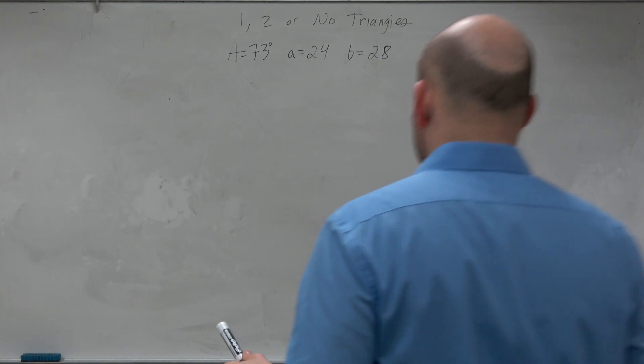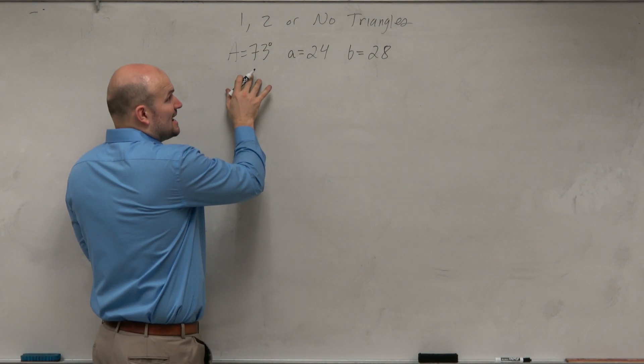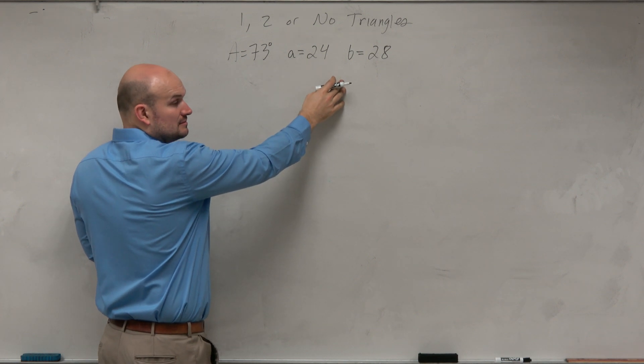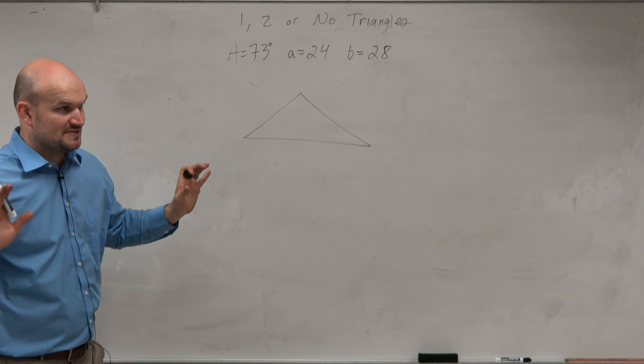So first thing is to draw a triangle. I don't know how many times, but we recognize this as an angle side-side, right? So we have an issue. This is the ambiguous case. It's not going to be an easy law of sines.